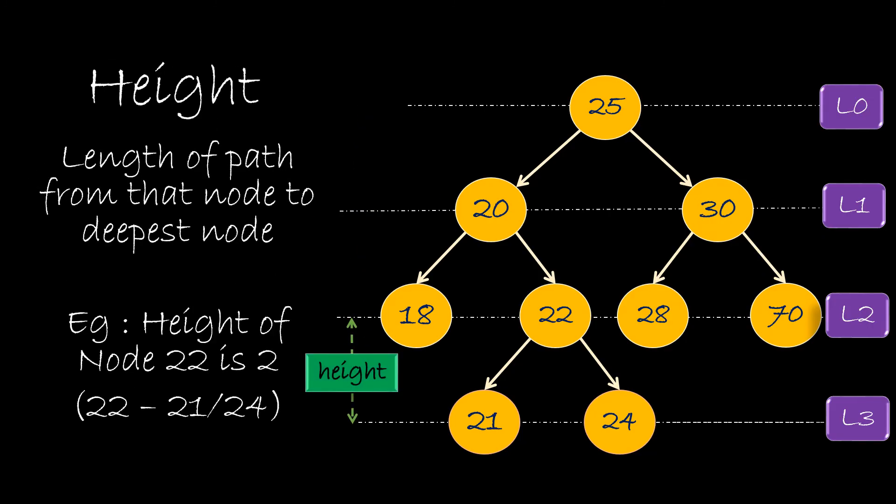The height of node is measured from the opposite direction. It is the length of path from that node to the deepest node. So the height of node 22 becomes 1, as it has one more node after it to reach the deepest level or the deepest leaf. These two concepts of height and depth are a bit confusing. So take your time but remember this thoroughly.